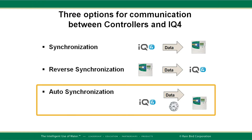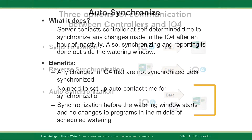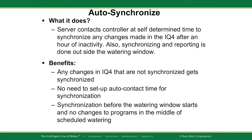Autosynchronization is a new feature in the IQ product line. It synchronizes any changes made in IQ4 to the controller after one hour of inactivity — it is a delayed automatic synchronization. This action is performed before the watering window, eliminating the need to set up autocontact for synchronization. The communication outside the watering window ensures that changes are not made to the controller during the watering window.